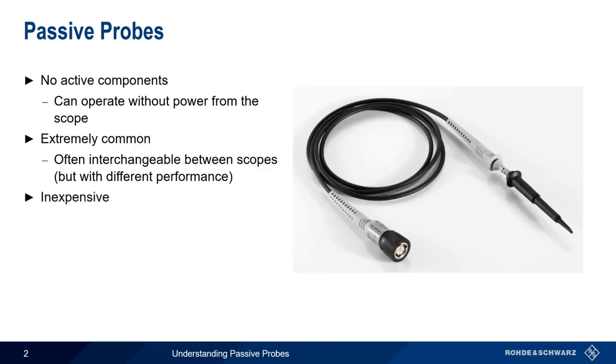Passive probes are relatively inexpensive, especially compared to active probes, and they're also more rugged than active probes. There's a reason why active probes are usually delivered and stored in a hard case, whereas passive probes are often delivered in plastic bags and left lying on or hanging near a bench.